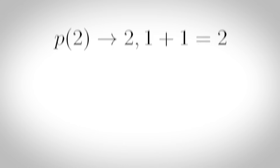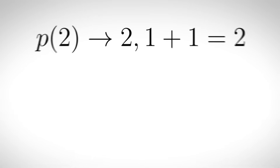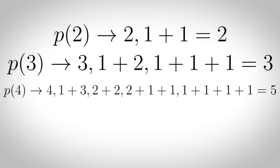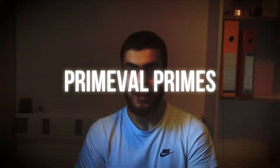Partition primes: the nth partition of a number is the number of ways you can write the number as a sum of positive integers where the order doesn't matter. So two gives us two ways to partition the number two, three gives us three ways, four gives us five ways and so on. Some of these are prime.